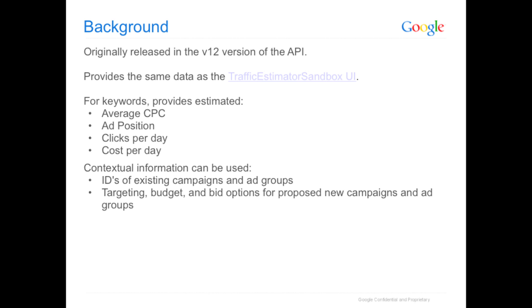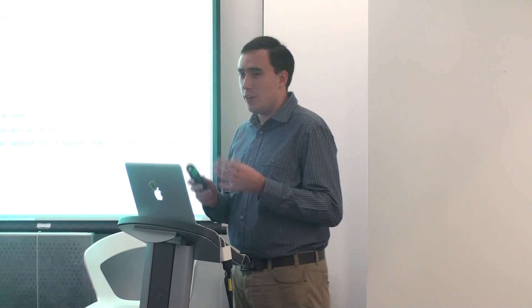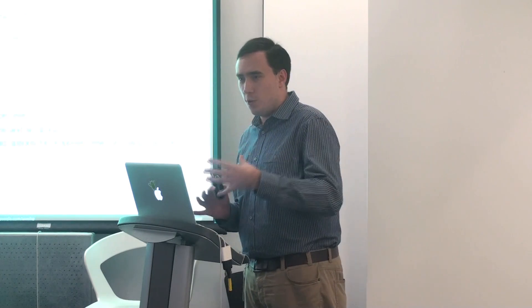If I were to add a keyword in some hypothetical ad group in some hypothetical campaign, how would it do? What's great about this service is it can also take the IDs of your existing ad campaigns and ad groups and use historical information about how well your particular campaigns and ad groups perform to shape the results.